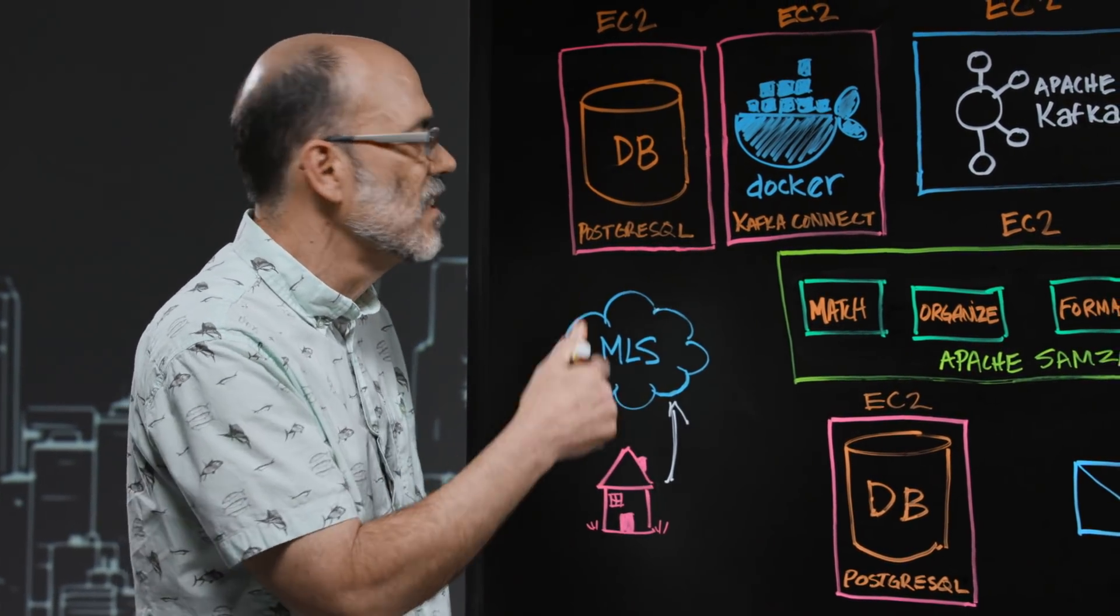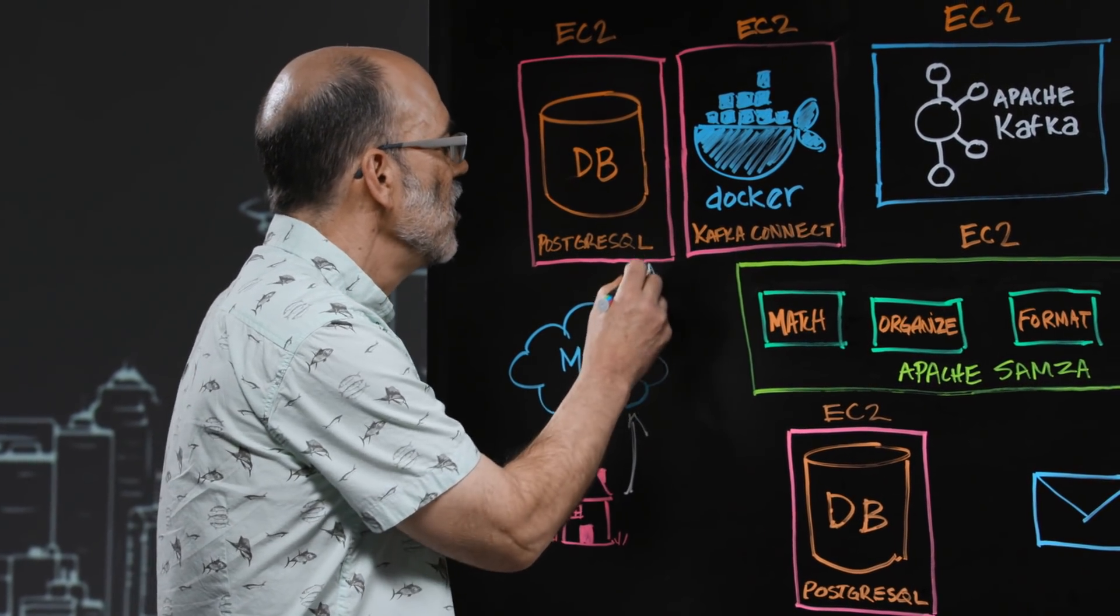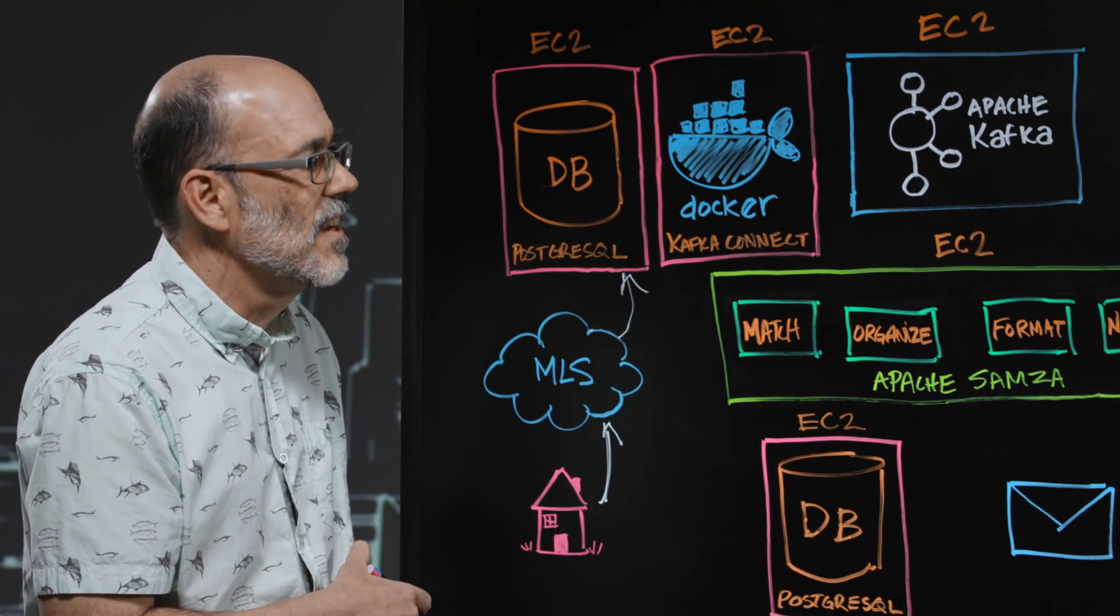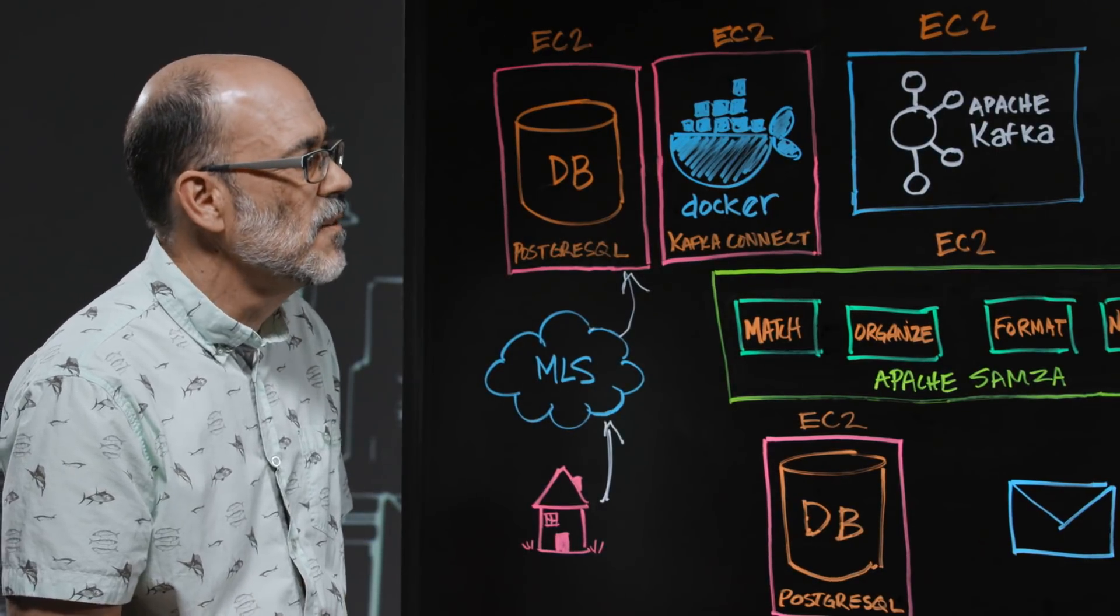Redfin belongs to all these multiple listing services, and we get a data feed that goes from the multiple listing service into our internal database. It's PostgreSQL running in our data center, and we have a replica of that running in an EC2 instance on AWS.